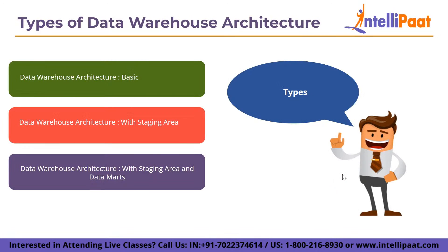Data warehouses and their architectural designs vary depending on the circumstances surrounding an organization. The three common architectures are: basic data warehouse architecture, data warehouse architecture with staging area, and data warehouse architecture with staging area and data marts.